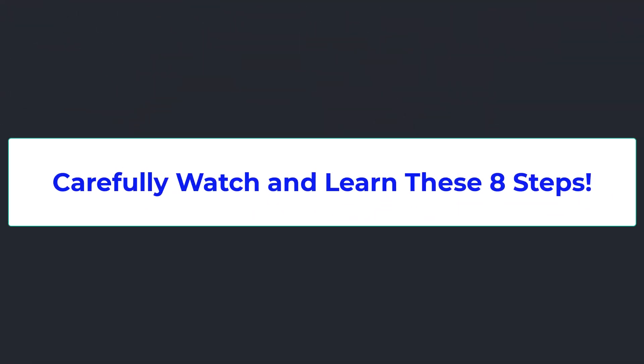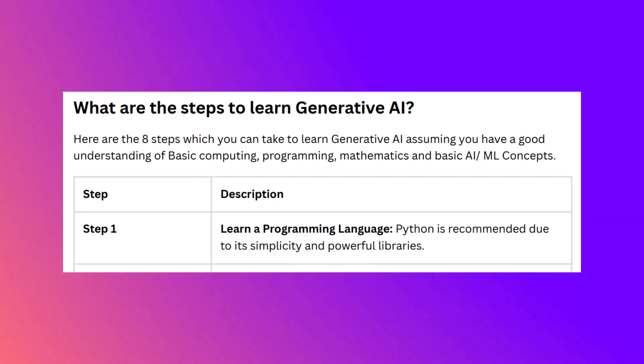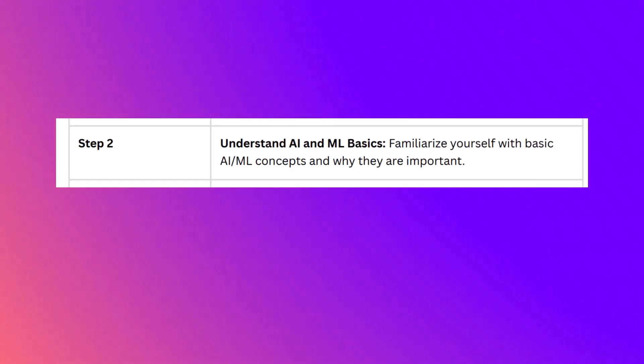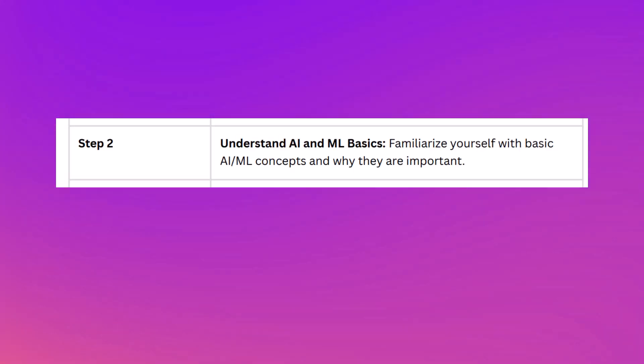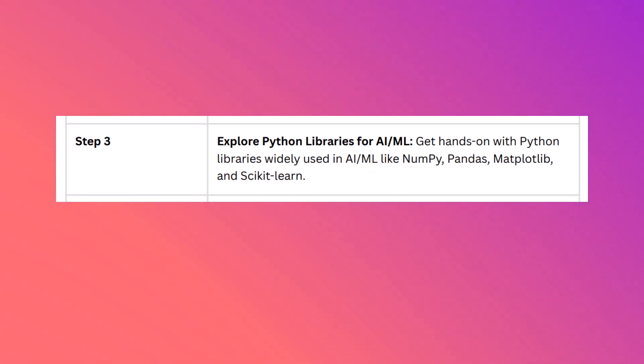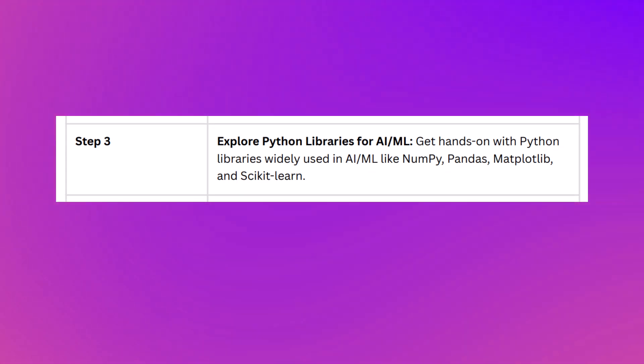Here are the eight steps I recommend if you're really interested in learning generative AI. Step one: learn Python programming — Python is recommended due to its simplicity and powerful libraries. Step two: understand AI and ML basics — get familiarized with AI and ML concepts and understand why they are important. Step three: explore Python libraries for AI and ML — get hands-on with widely used libraries like NumPy, Pandas, and scikit-learn.